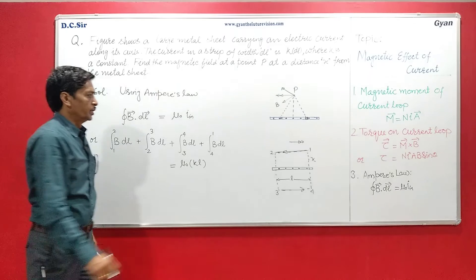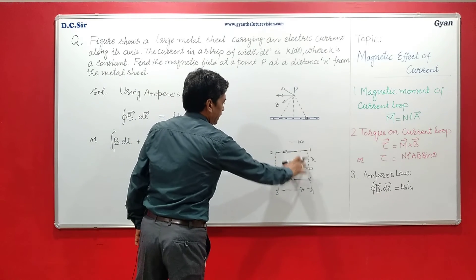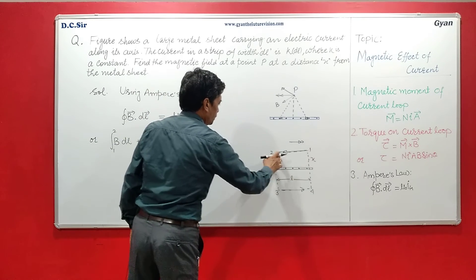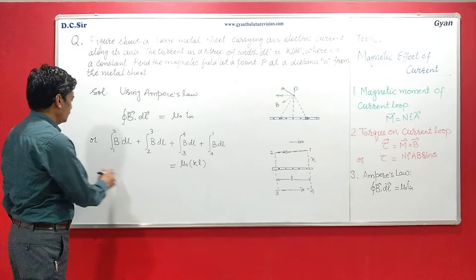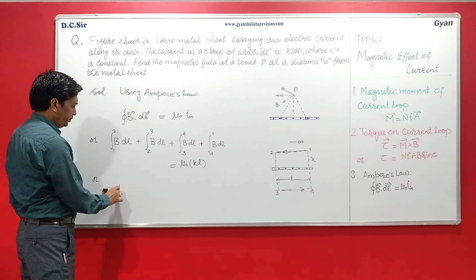So as the length of this element is L, so this 1 to 2 is also L, so we can write here B into L.